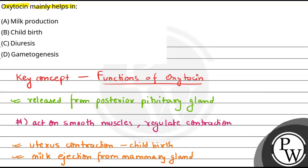If we talk about milk production, which is given in option A, that is the responsibility of prolactin. For milk ejection, oxytocin is responsible.